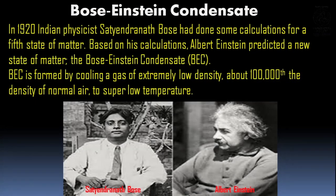Now let's learn about the fifth state of matter — this is beyond your syllabus, but I want you to know it. In 1920, Indian physicist Satyendra Bose did some calculations for a fifth state of matter. Based on his calculations, Albert Einstein predicted a new state of matter — the Bose-Einstein condensate, or BEC. BEC is formed by cooling a gas of extremely low density — about one hundred thousandth of the density of normal air — to super-low temperatures. When you grow up, you'll learn more about it.